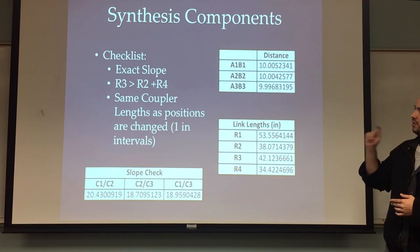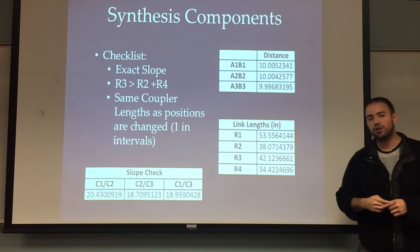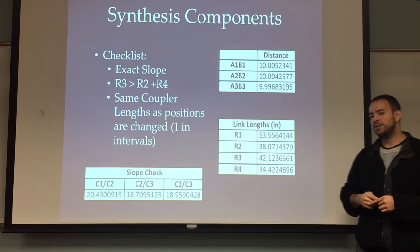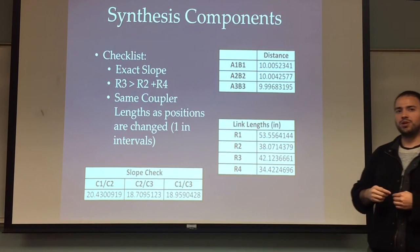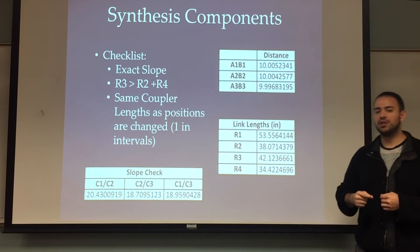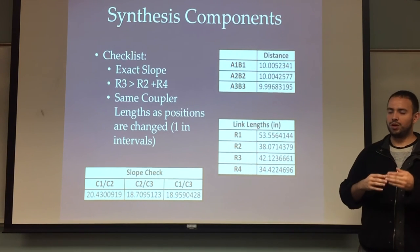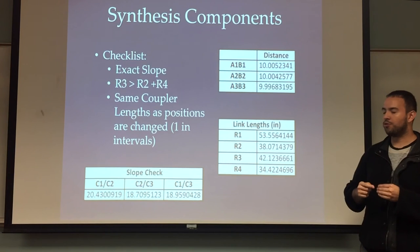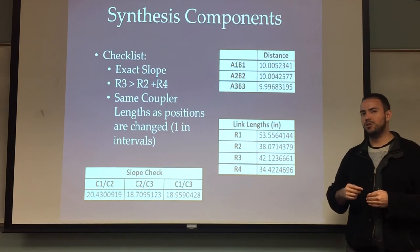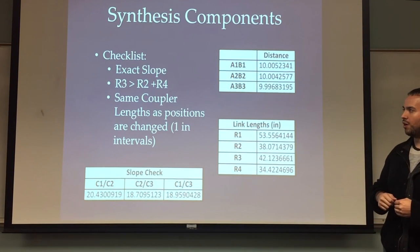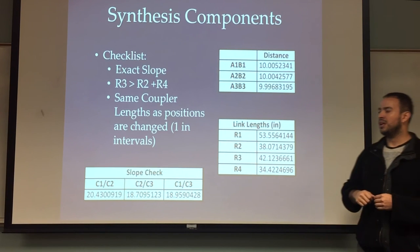We have R3, the link R3, has to be greater than R2 and R4. The reason for this is that on our mechanism ourselves, when we're going through our iterations, we found out that R3, when it was approximately the size of either R2 or R4, it would lock up. And so this is a general guideline that we found through some of our iterations.